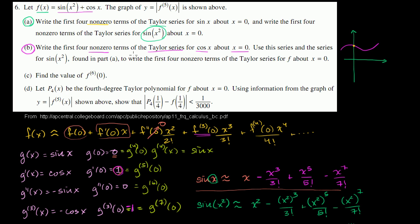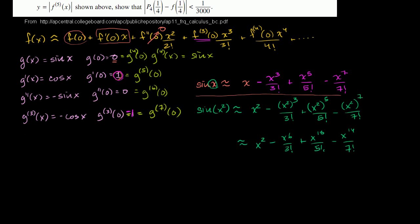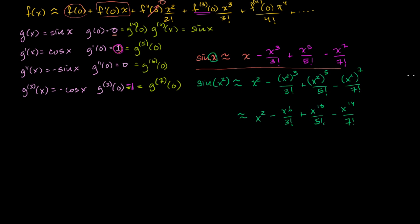So let's do the first part — find the first four non-zero terms of the Taylor Series for cosine of x about x equals 0. We'll put our formula for the Taylor series centered around x equals 0 up here.